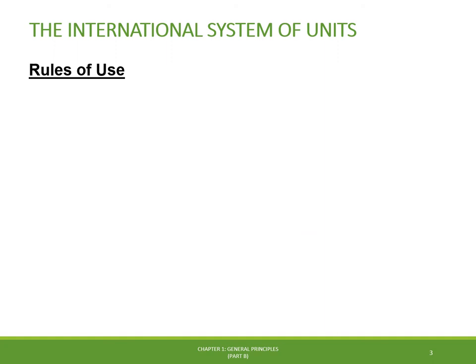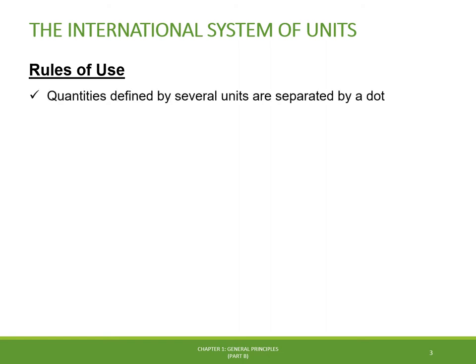We now highlight some important rules for the proper use of international system units and symbols. First, quantities defined by several units that are multiples of each other should be separated by a dot to avoid confusion with prefix notation. For example, when decomposing newtons into its basic units, we need to put a dot between kilograms and meters per second squared. The same rule applies if you further decompose velocity, putting a dot between meters and second to the power minus two.